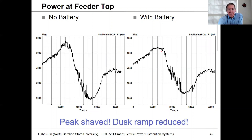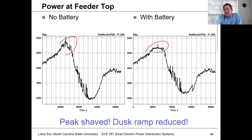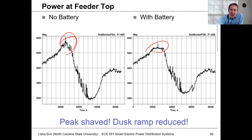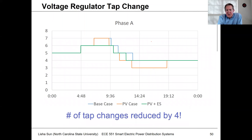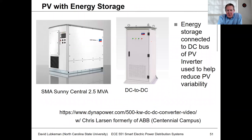This shows the power at the top of the feeder. When you're discharging into the system, mirroring the shape of the peak, you can level it down to a great extent — helping reduce the morning peak. This also has some positive impact on tap changes.